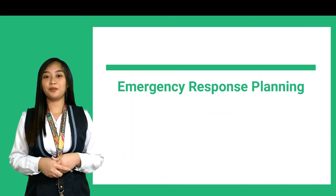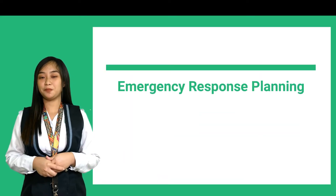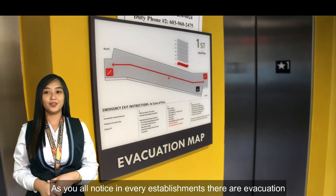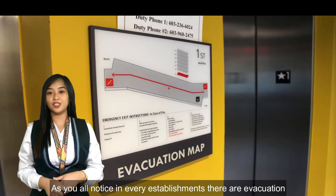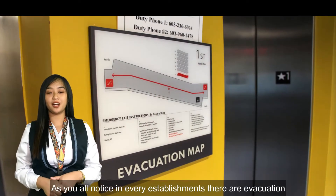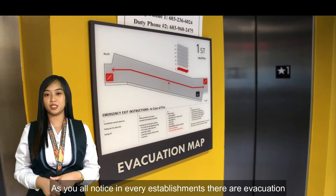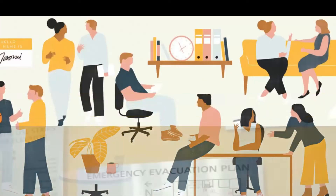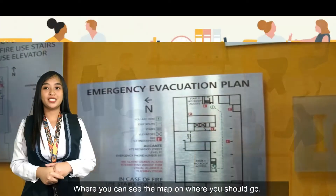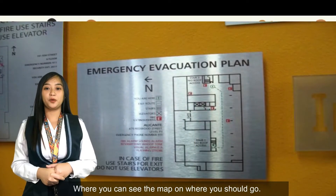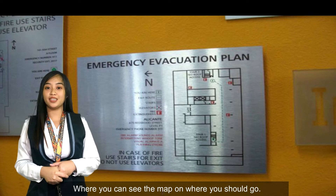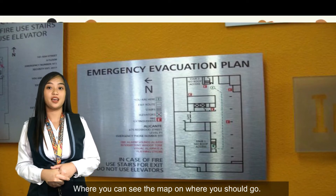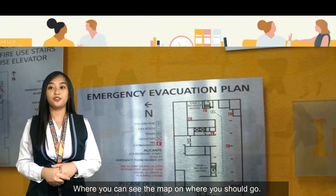Sixth is emergency response planning. As you may have noticed, in every establishment there are evacuation or emergency plans posted on the wall, where you can see a map of where you should go if there are unexpected accidents such as earthquake and fire.